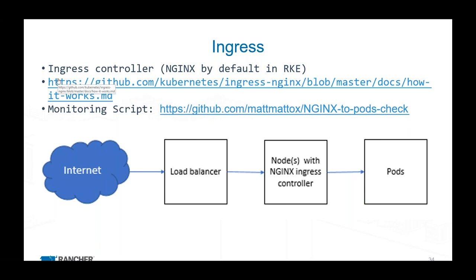The other big one is ingress. Long story short, the load balancer that Rancher uses by default today is nginx. It's effectively plain old nginx with some extra functionality added to make it work in the Kubernetes world. Basically how it works: you have kube-proxy running on all your worker nodes that forwards traffic — think of it as a layer-four TCP forward to one of the ingress controllers. Those ingress controllers are basically just running nginx.